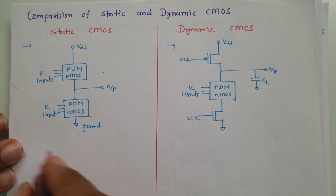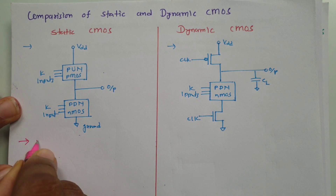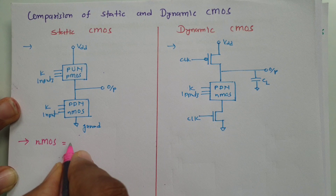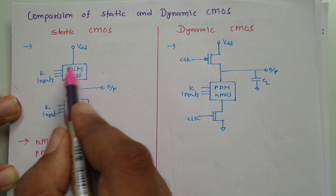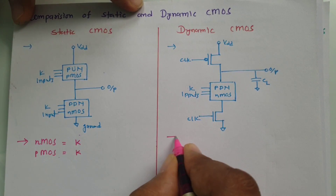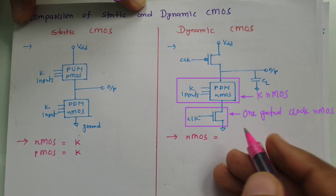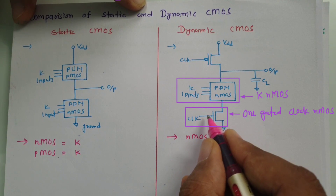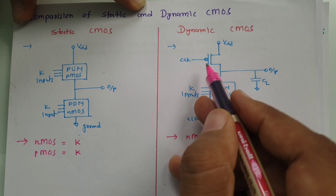Now if you observe how many transistors are there: in static CMOS, the pull-down network is made up of NMOS with K inputs, so there are K NMOS transistors. The pull-up network is made up of PMOS with K inputs, so there are K PMOS transistors. In dynamic CMOS, the pull-down network has K NMOS plus one gated clock NMOS. For PMOS, only one gated clock PMOS is present.